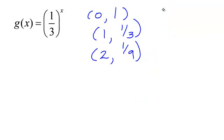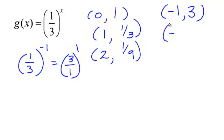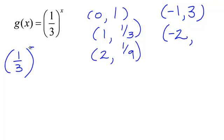Let's plug in some negative numbers. If I plug in negative 1, be careful with these negative exponents. I will have 1 third in parentheses to the negative 1. That is the same as 3 over 1 to the first — the term in the numerator moves to the denominator and what was in the denominator comes to the numerator. So 1 third to the negative 1 equals 3. If I plug in negative 2, I get 1 third to the negative 2, which equals 3 over 1 to the positive 2, which is positive 9.